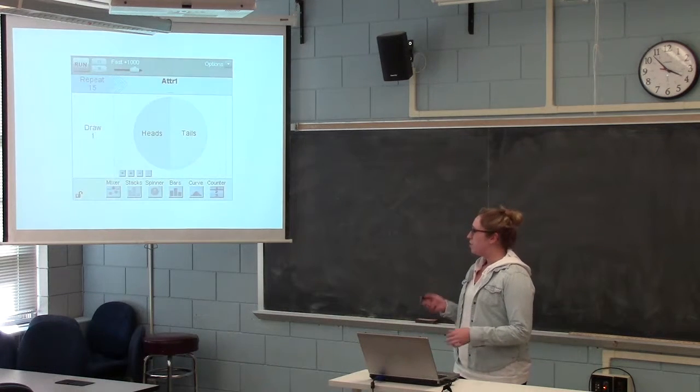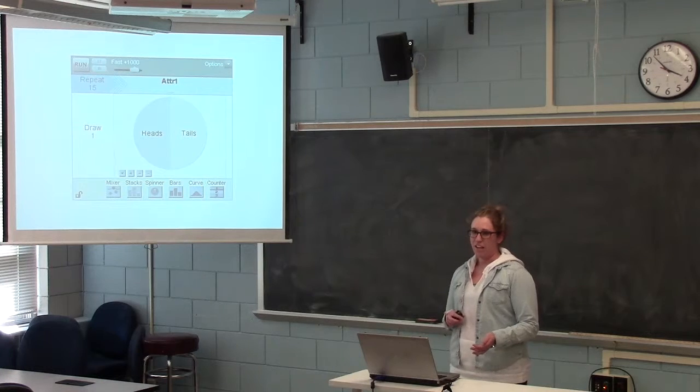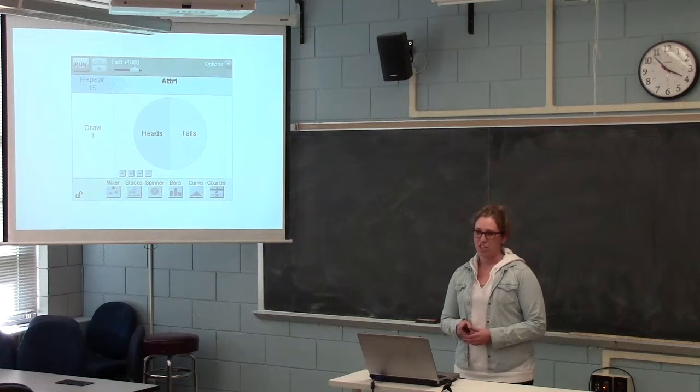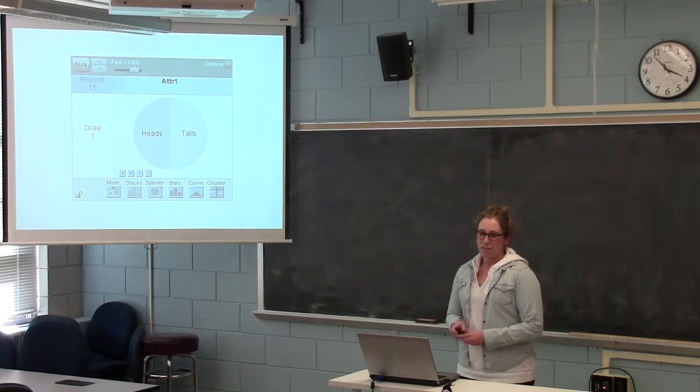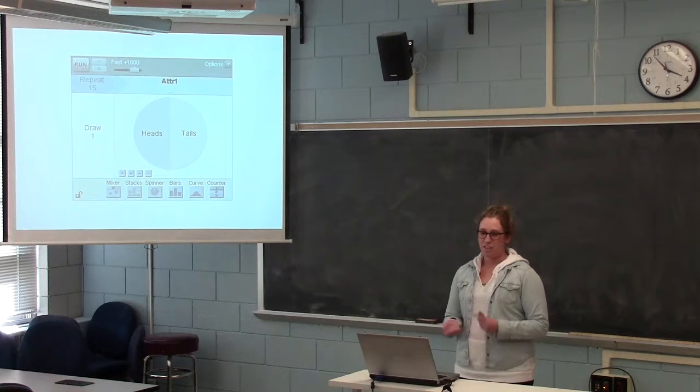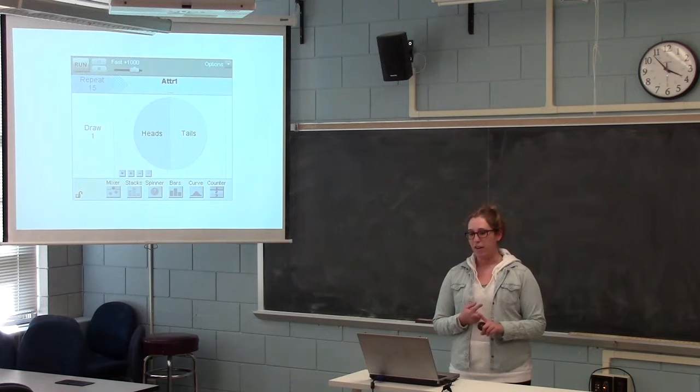So a p-value is actually the probability that something is occurring by chance. For example, we can have flipping a coin. When you flip a coin, your chances are you either have heads or you have tails.